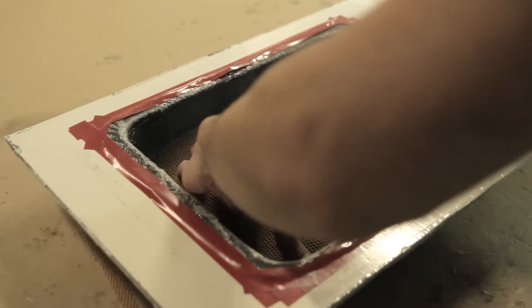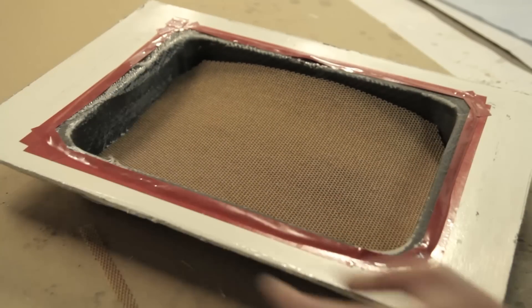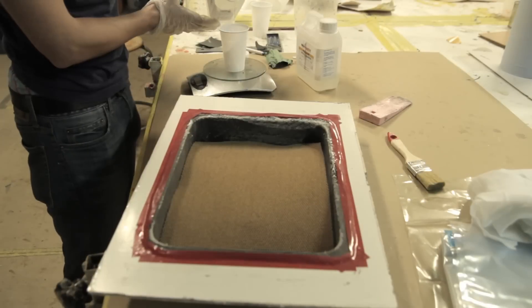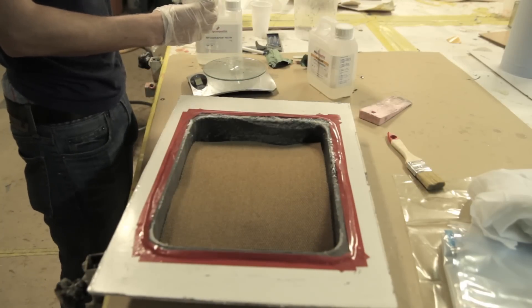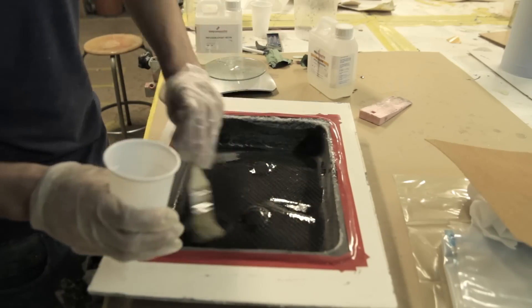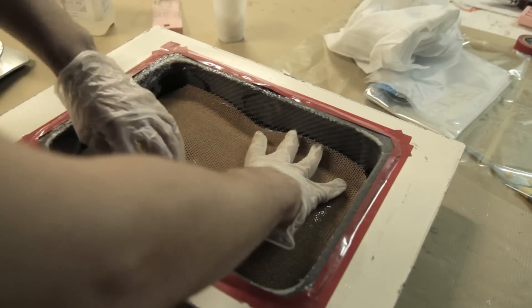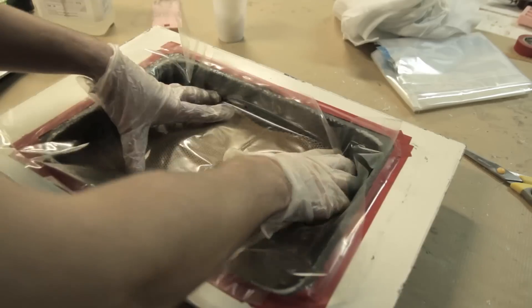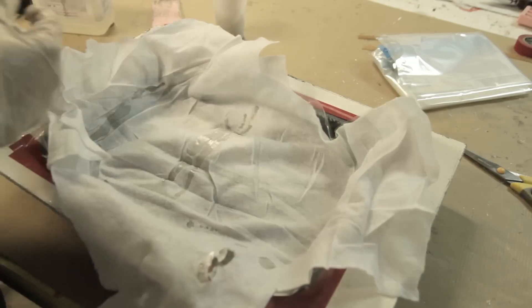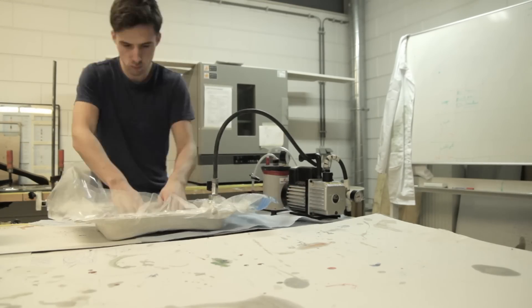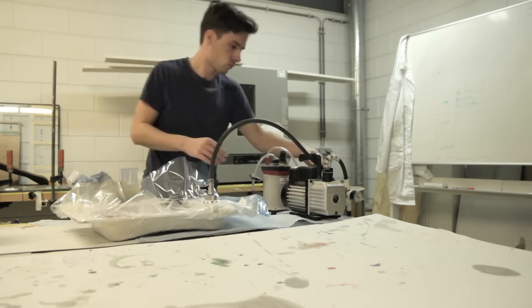Here I'm adding the Nomex honeycomb. This is what it looks like - very lightweight. It will take some 3D shapes and make the part so much stronger. Here you can see I'm adding a layer of epoxy resin. I'm going to glue that onto the part first before continuing.